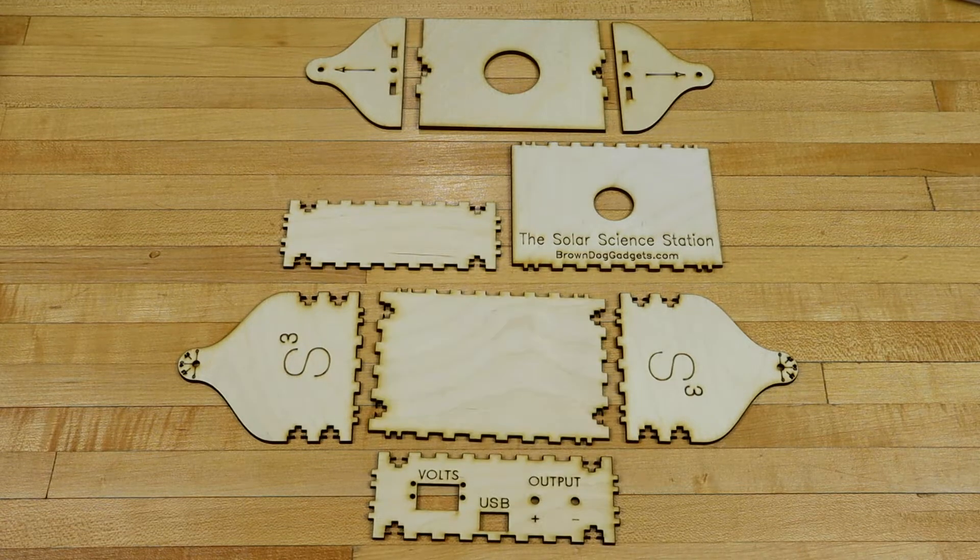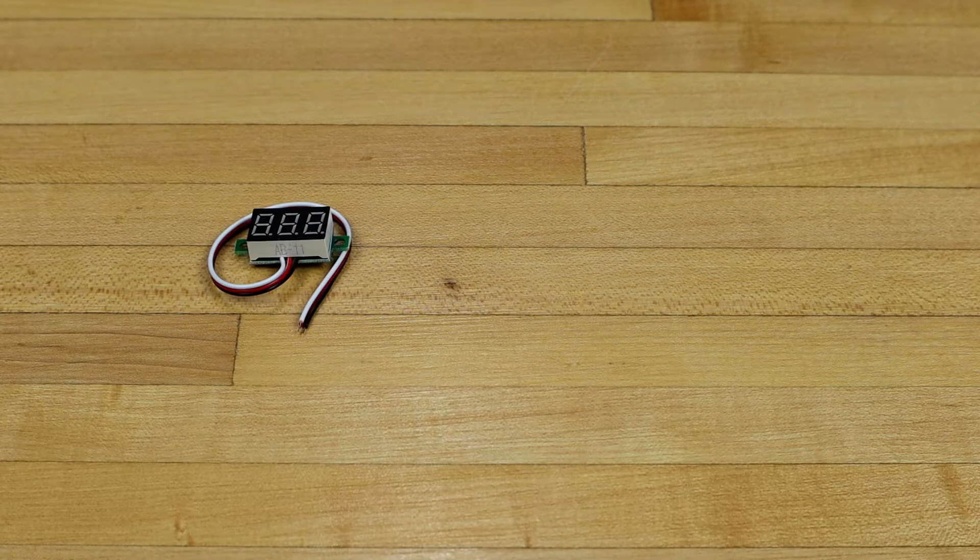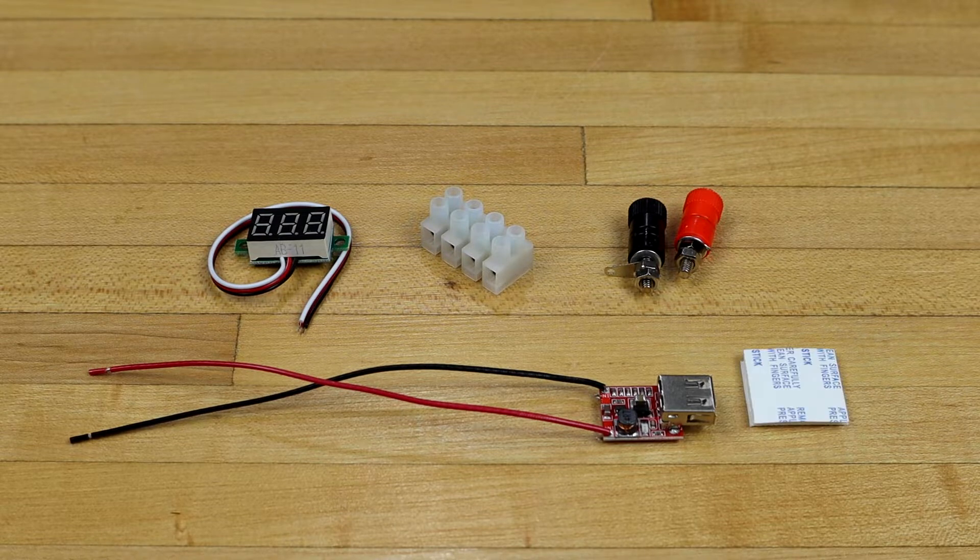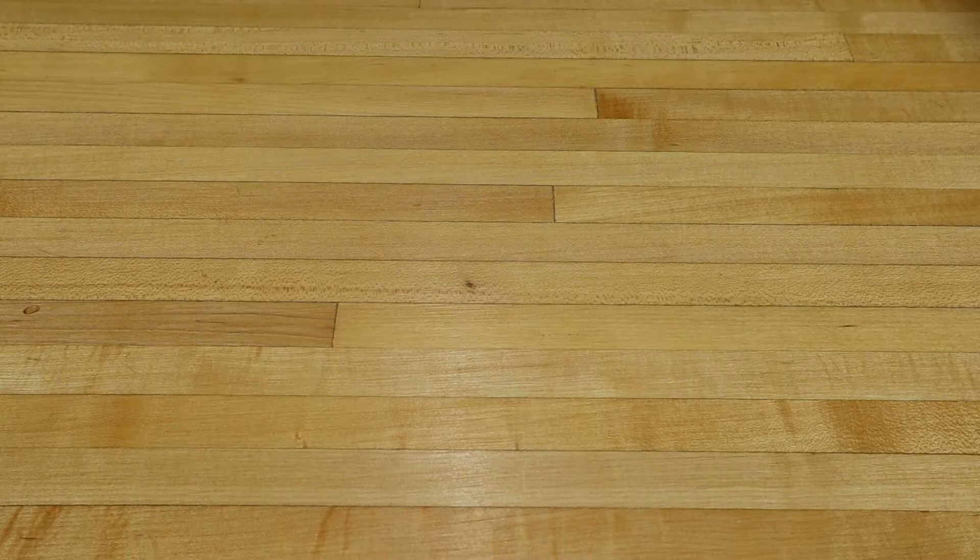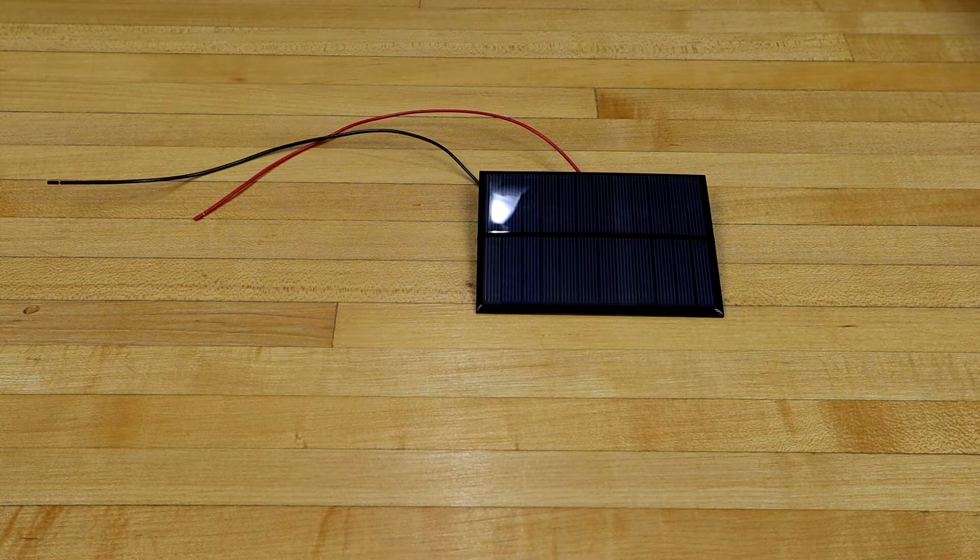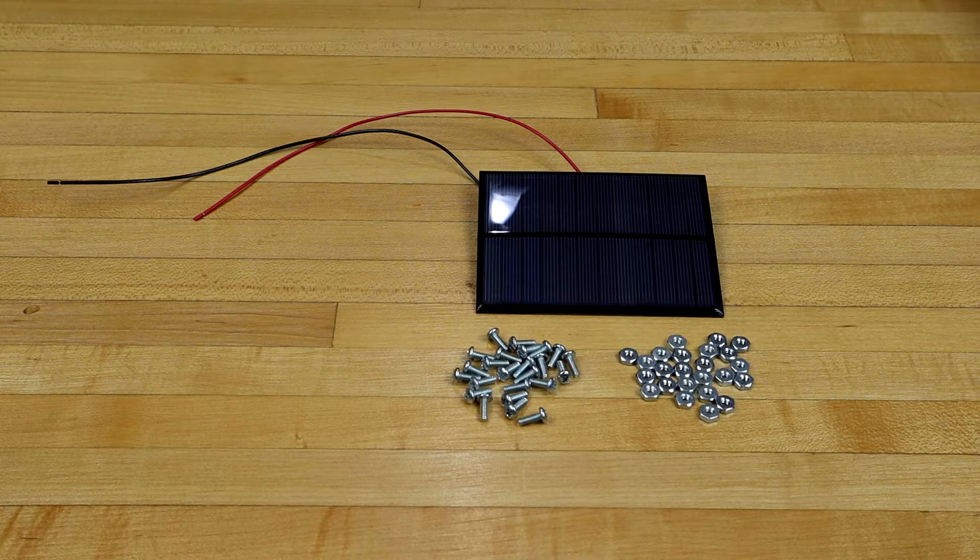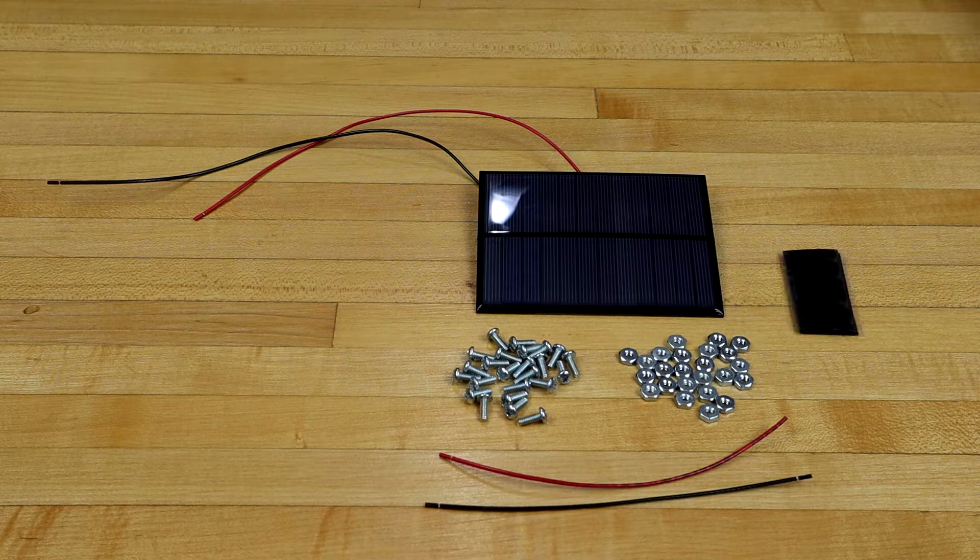And the bottom plate. We also need our electrical components: voltmeter, screw-down terminal block, power output jacks, USB circuit, and double-sided foam tape. Lastly, our solar cell with pre-soldered wire leads, screws and nuts to assemble the case, a few wires, and Velcro.